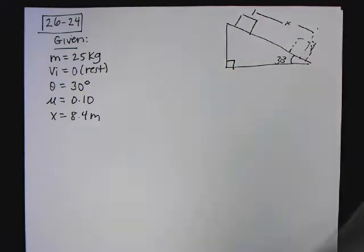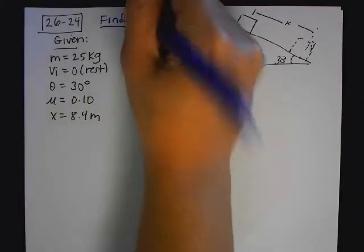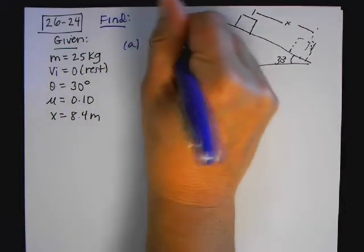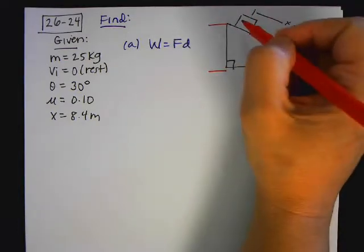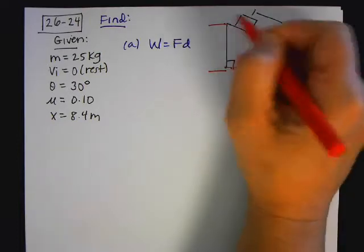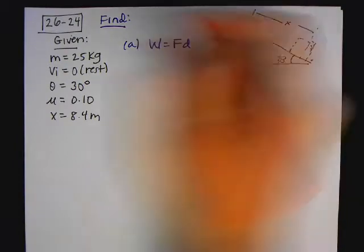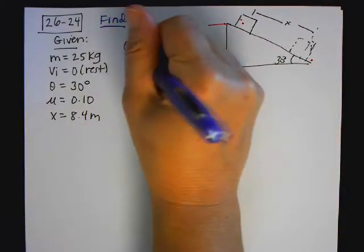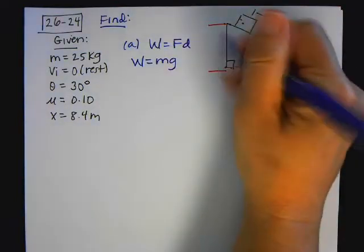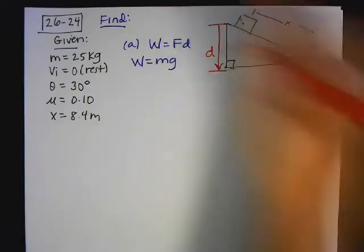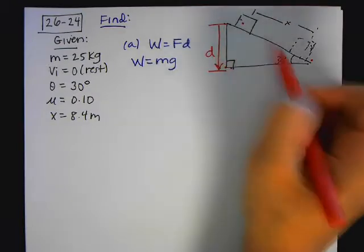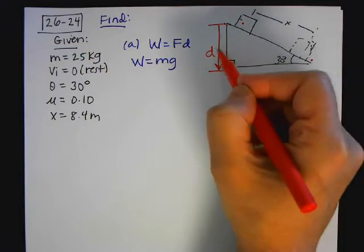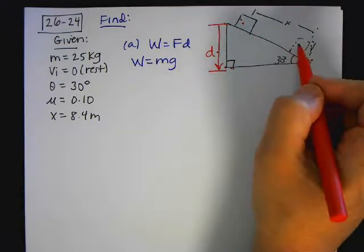Question one says determine the work done by gravity. We know work is equal to force times displacement. The work done by gravity is the same from here to here because it has to do with the vertical displacement. So work equals the weight, which is mg, times this vertical displacement D. The weight acts vertically downward, so I need to do a little geometry. I see that D is opposite the 30-degree angle, and 8.4 is the hypotenuse.